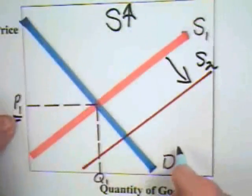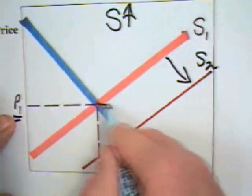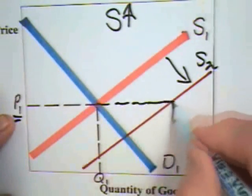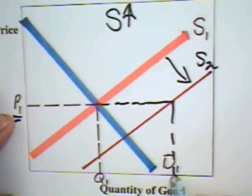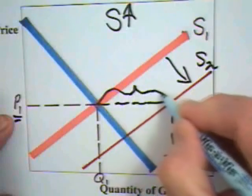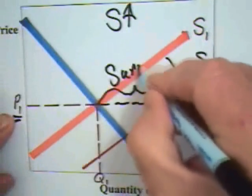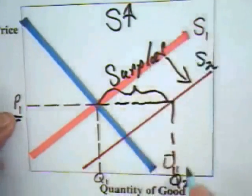If that is the case, at the initial price of P1, the quantity demanded is now going to be Q1. The quantity supplied is going to be out here at Q2. We have a quantity supplied greater than the quantity demanded. We have a surplus in the market.